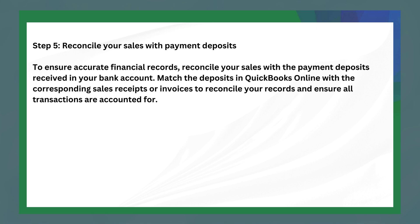The last step is to reconcile your sales with payment deposits. To ensure accurate financial records, reconcile your sales with the payment deposits received in your bank account. Match the deposits in Cookbooks Online with the corresponding sales receipts or invoices to reconcile your records and ensure all transactions are accounted for.